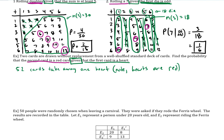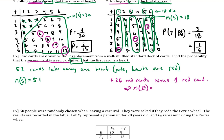So that means our new sample space is really 51 for this problem, because we had 52 cards but we're taking away one of them, and it happens to be a heart. Well, there were 26 reds to start, but we're taking away one of them — because if we take away one heart, that means we are also taking away one red. So 26 red cards minus one red card: 26 minus 1 is 25. So the probability is 25 out of 51.